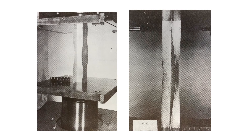One of the first things we need to know is whether our cross section has slender elements or not, which indicates whether local buckling might be an issue. These images from a textbook by Gaylord and Gaylord show local buckling of different elements — likely made from aluminum since its modulus is about a third of steel's, making it easier to test. On the left you can see rippling in the flanges of an I-shape or W-shape section, indicating local buckling of that flange.